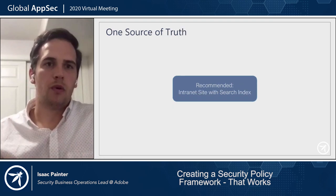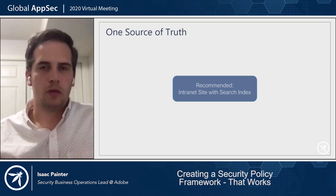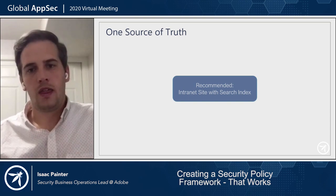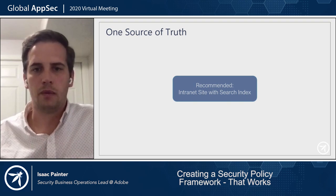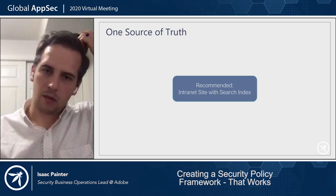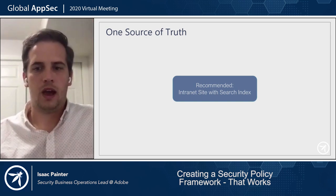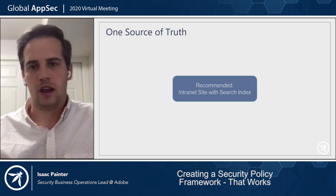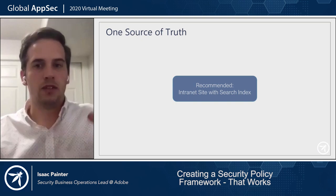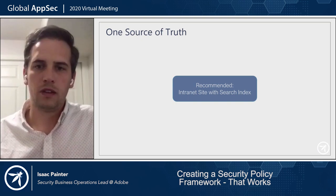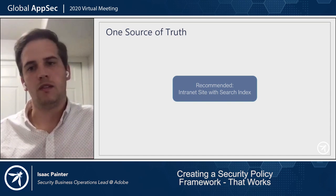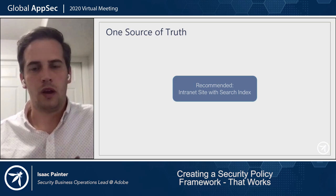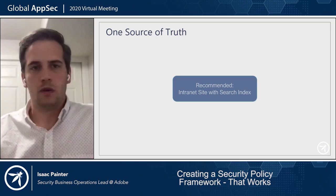One source of truth is very important. Employees over time will learn where policies live, but if they live in multiple places, you won't have one uniform way to find them and it makes review and updates very hard. At Adobe, we use an intranet site called Inside Adobe with a search box where we put PDFs of all our policies and standards, indexed so you can find them by keywords or document title. Other policy management tools that integrate with SharePoint work well too.